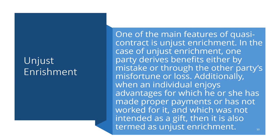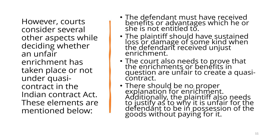The entire quasi-contract is based upon one principle called unjust enrichment. One of the main features of quasi-contract is unjust enrichment. In the case of unjust enrichment, one party delivers benefits either by mistake or through the other party's misfortune or loss. When an individual enjoys advantages for which they have not made proper payment or worked for, and which was not intended as a gift, it is termed unjust enrichment — you are getting some benefit because of my bad luck or misfortune.